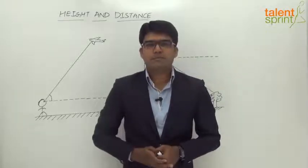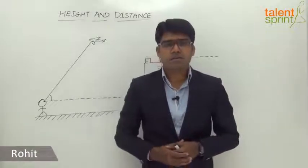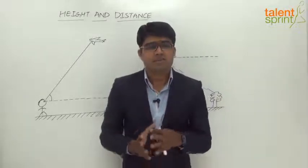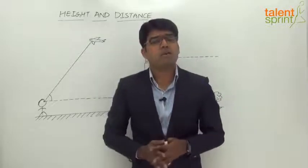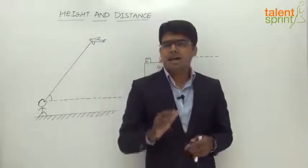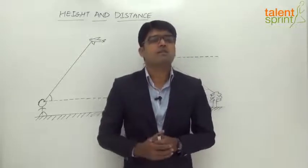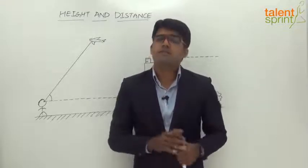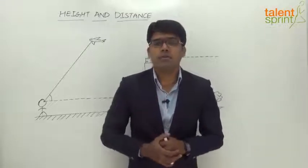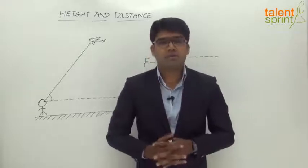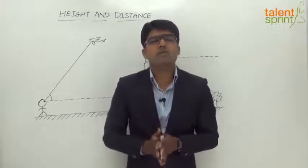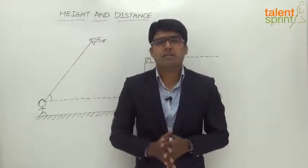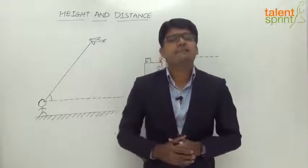Hello everyone and welcome to Talent Sprint. In this session we are going to learn about a very interesting topic called height and distance. In this topic the candidate is required to find either the height of a given object or the distance of the object from any given point, which are not directly measurable. The knowledge gained from trigonometry would help us a lot, and we make use of different trigonometric ratios, especially tan theta and cot theta, to solve questions from this topic.